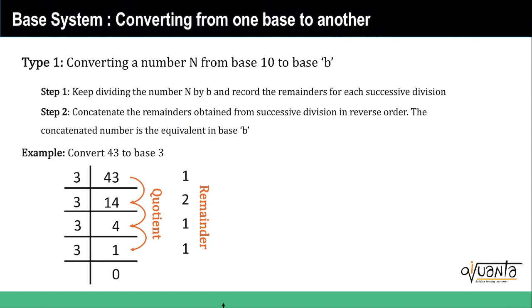Now we concatenate these remainders in reverse order. So what we get is 43 in base 10 is equal to 1121.